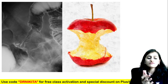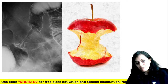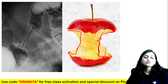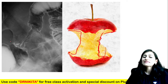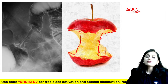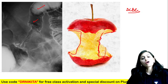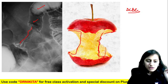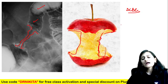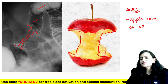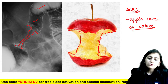This is the apple core sign — irregular narrowing with shoulder-like appearance. The investigation is barium enema — this is double contrast barium enema because you can see both the white barium and the black air. This apple core narrowing is suggestive of carcinoma colon.